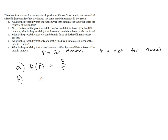In letter B, given that one of the positions is filled with a candidate in favor — we'll call that seat one — what is the probability that the second candidate chosen is also in favor? If the first candidate was already chosen, there are four people left. Since the person chosen was one of the candidates in favor, there are now only two candidates left who are also in favor. So there are two out of four people left who are in favor of the removal.